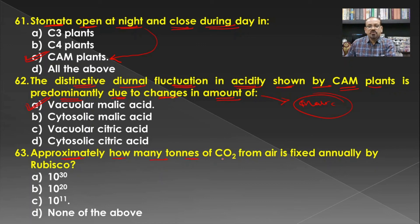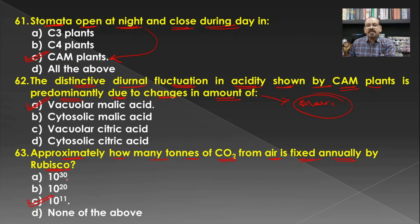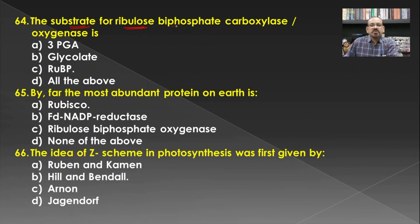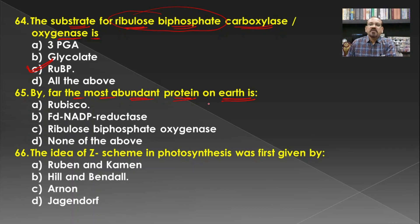Approximately how many tons of CO₂ from the air is fixed annually by Rubisco? This is a general knowledge question: 10 to the power of 11 tons of CO₂ is fixed annually by Rubisco. The substrate for Rubisco (ribulose bisphosphate carboxylase/oxygenase) is ribulose 1,5-bisphosphate (RuBP).